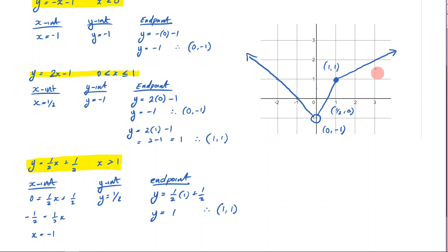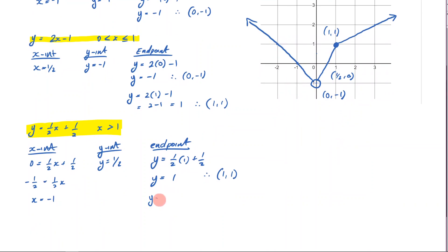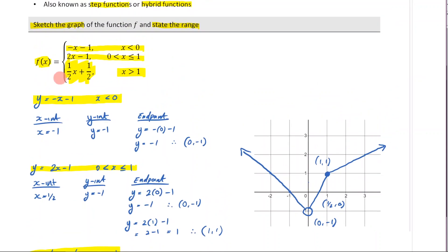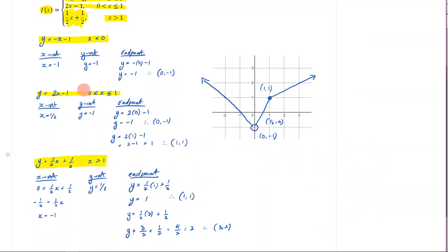Also verify that the line looks like it goes through three, two. Subbing in x equals three: one half times three plus one half equals three halves plus one half, which equals four halves, which is two. So the point three, two checks out. Make sure that if you are given a grid, everything works out correctly. Hopefully you feel confident sketching piecewise functions neatly. It's always important to label your x and y intercepts — for example, negative one, zero — and label your endpoints. Everything should be looking good.